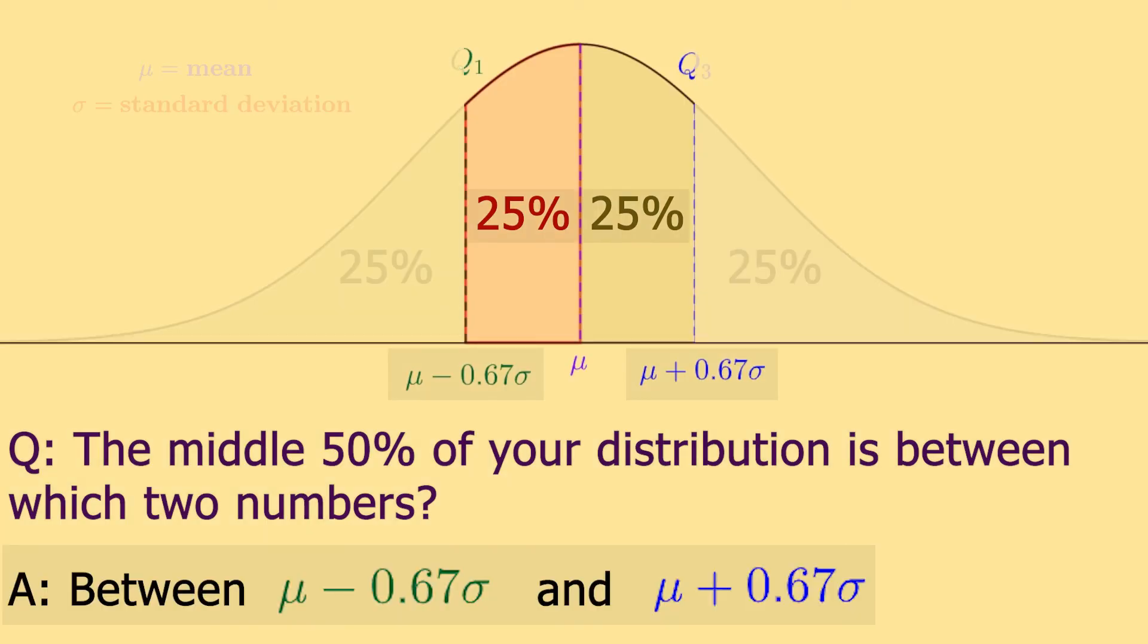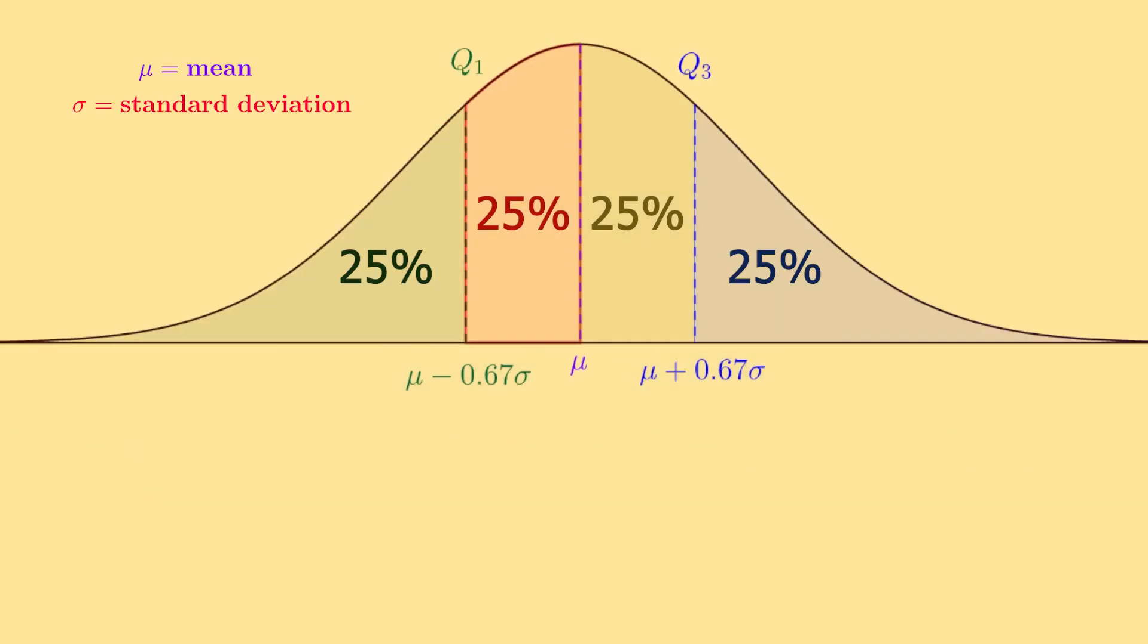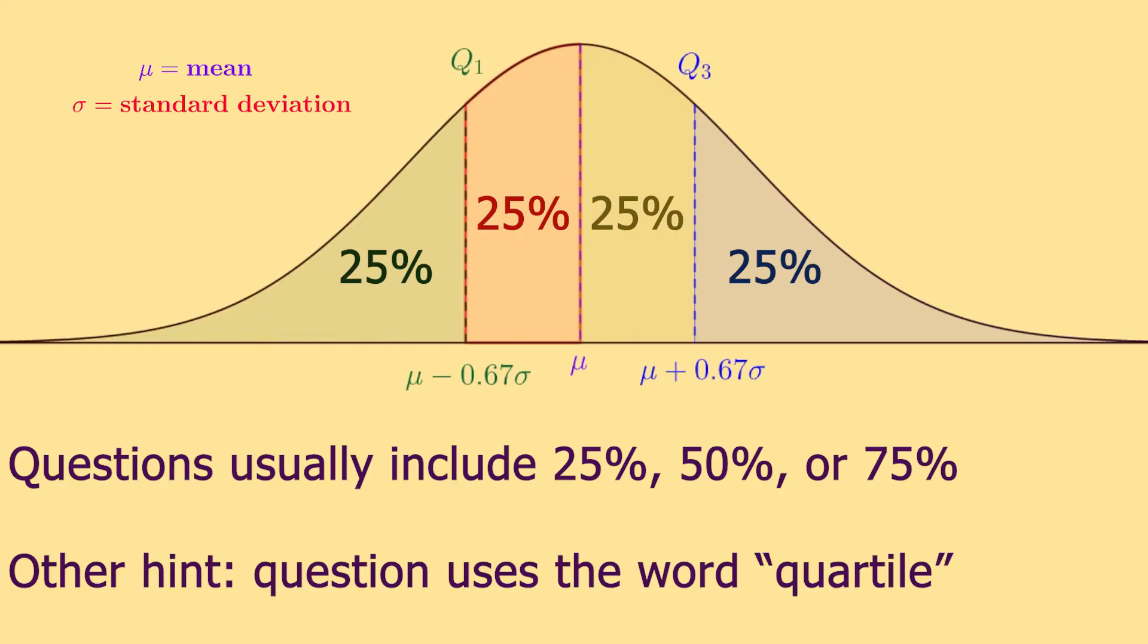So you would use both these numbers to find that interval. The main giveaway for problems that involve quartiles is if the question involves 25, 50, or 75% of your distribution. Anytime you hear that percent, you might know to use these quartiles to help find the answer.